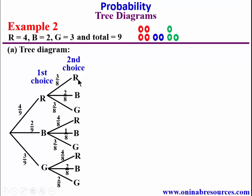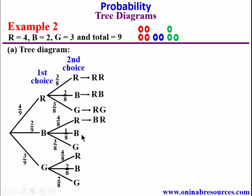We now get the possible outcomes. Reading along the branches: red-red, red-blue, red-green, blue-red, blue-blue, blue-green, green-red, green-blue, and green-green. These are the possible outcomes.